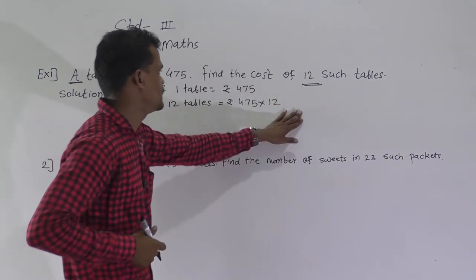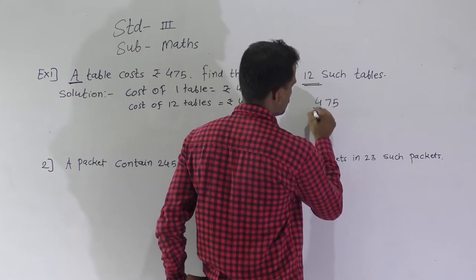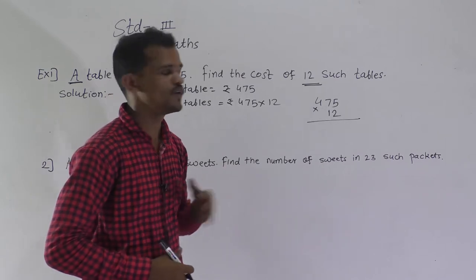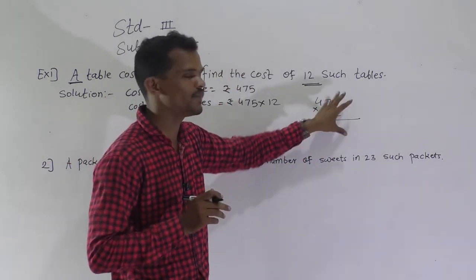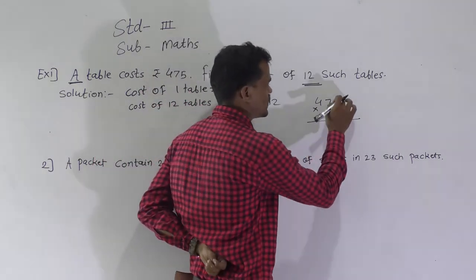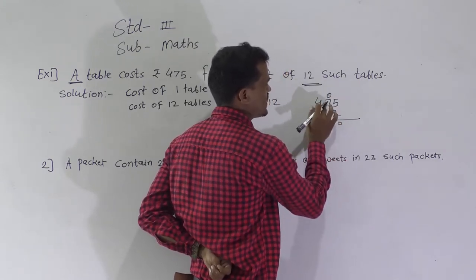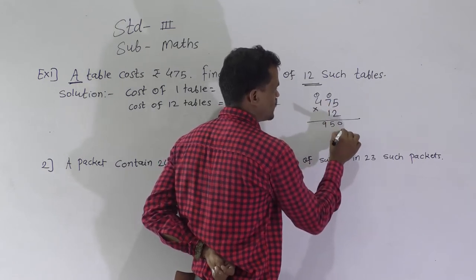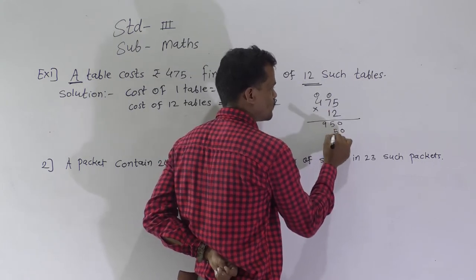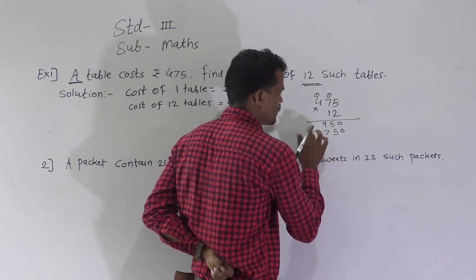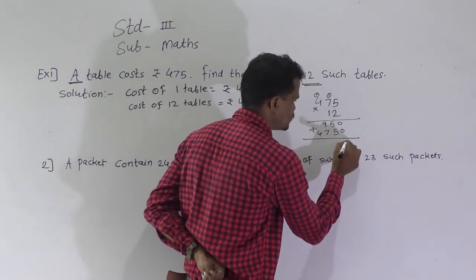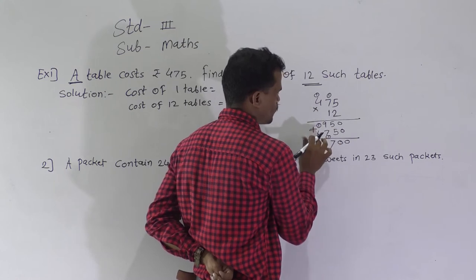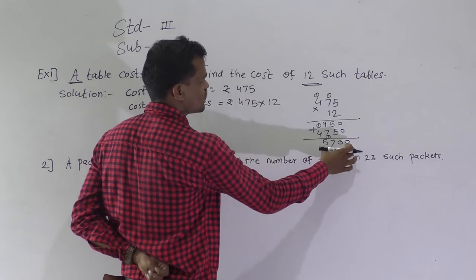Solve 475 multiplied by 12. For your understanding, I am solving this in long multiplication method. 2 fives are 10, write 0, carry 1. 2 sevens are 14 plus 1 is 15, write 5, carry 1. 2 fours are 8 plus 1 is 9. Then multiply by 1: 1 five is 5, 1 seven is 7, 1 four is 4. Write the next step result.